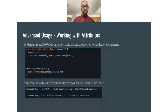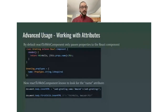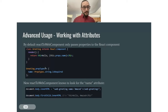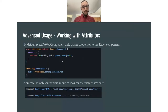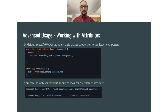By default, React to Web Component only passes properties to the React component and does not use HTML attributes. But we can enable HTML attributes by working with prop types. We take our same greeting component, access its `propTypes`, and assign the name property a `string` and `isRequired` value. Now React to Web Component knows to look for the name attribute whenever you use your `web-greeting` component.